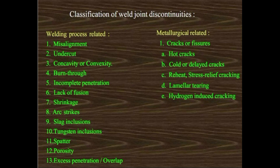Classification of weld joint discontinuities that can be seen in relation to PWHT, post heat, and preheat: process-related discontinuities include misalignment, undercut, burn through, incomplete penetration, lack of fusion, shrinkage, arc strike, slag inclusion, and tungsten inclusion. Metallurgical discontinuities include cracks or fissures, hot and cold cracks, reheat stress cracking, lamellar tearing, and hydrogen induced cracking. These will be described in detail in the next video.